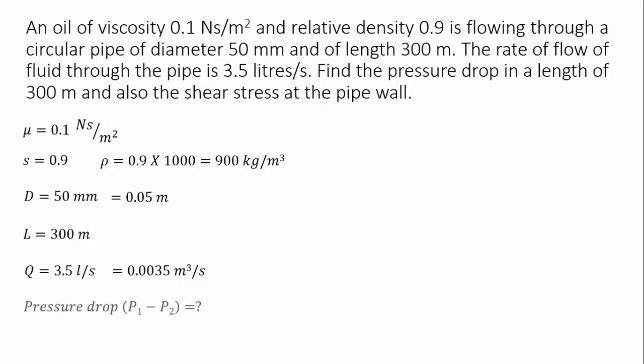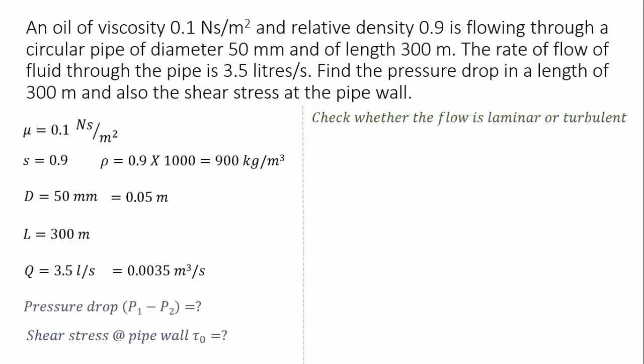We have to find the pressure drop and the shear stress at the pipe wall. Before solving this problem, we need to determine whether the flow is laminar or turbulent. If the flow is laminar, we can use the Hagen-Poiseuille equation. If the flow is turbulent, we have to use the Darcy-Weisbach equation, which we will see later.